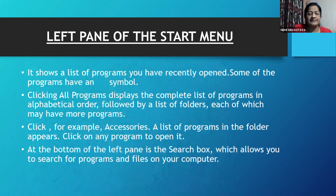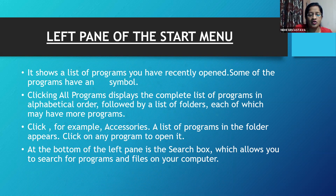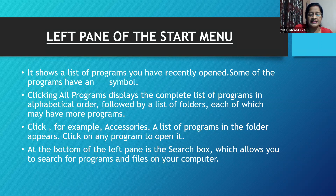The left pane of the Start menu shows a list of programs you have recently opened. Some of the programs have an arrow symbol. Click on programs to display the complete list of programs in alphabetical order, followed by a list of folders, each of which may have more programs. Click, for example, Accessories, and a list of programs in the folder appears. Click on any program to open it. At the bottom of the left pane is the search box, which allows you to search for programs and files on your computer.